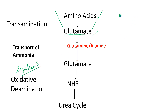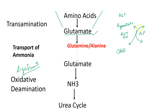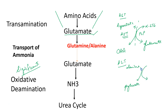Examples of transamination reactions include aspartate forming its corresponding keto acid oxaloacetic acid in the presence of enzyme aspartate transaminase (AST). It is a freely reversible reaction and requires the cofactor pyridoxal phosphate. Similarly, ALT is another transaminase which converts alanine to pyruvate, with glutamate formation being inevitable. This also occurs in the presence of alanine transaminase enzyme, which requires pyridoxal phosphate.